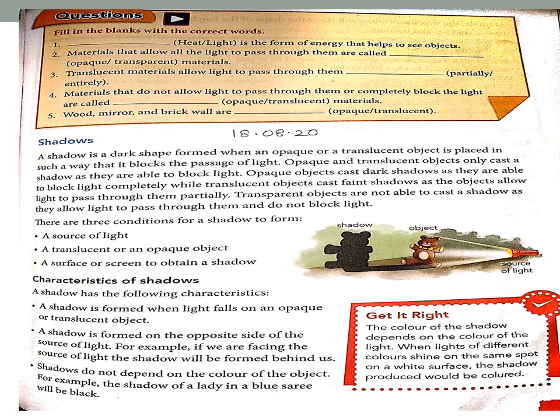If you are facing the source of light, the shadow will be formed behind you. Third characteristic: the shadow does not depend on the color of the object — it will always be black. For example, a lady wearing a blue sari will still have a black shadow.